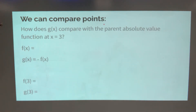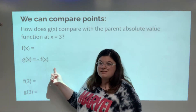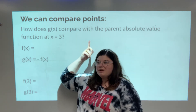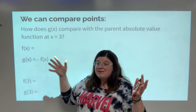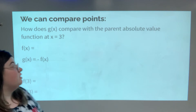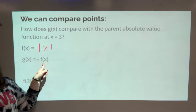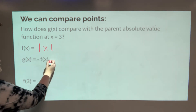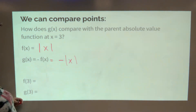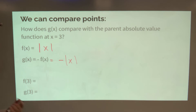What if we wanted to compare points from functions? The question is: how does g(x) compare with the parent absolute value function at x equals three? g(x) is defined as negative f(x), where f(x) is the parent absolute value function. So f(x) equals absolute value of x, and g(x) equals negative absolute value of x. We just need to plug in x equals three into both functions and see what we get.